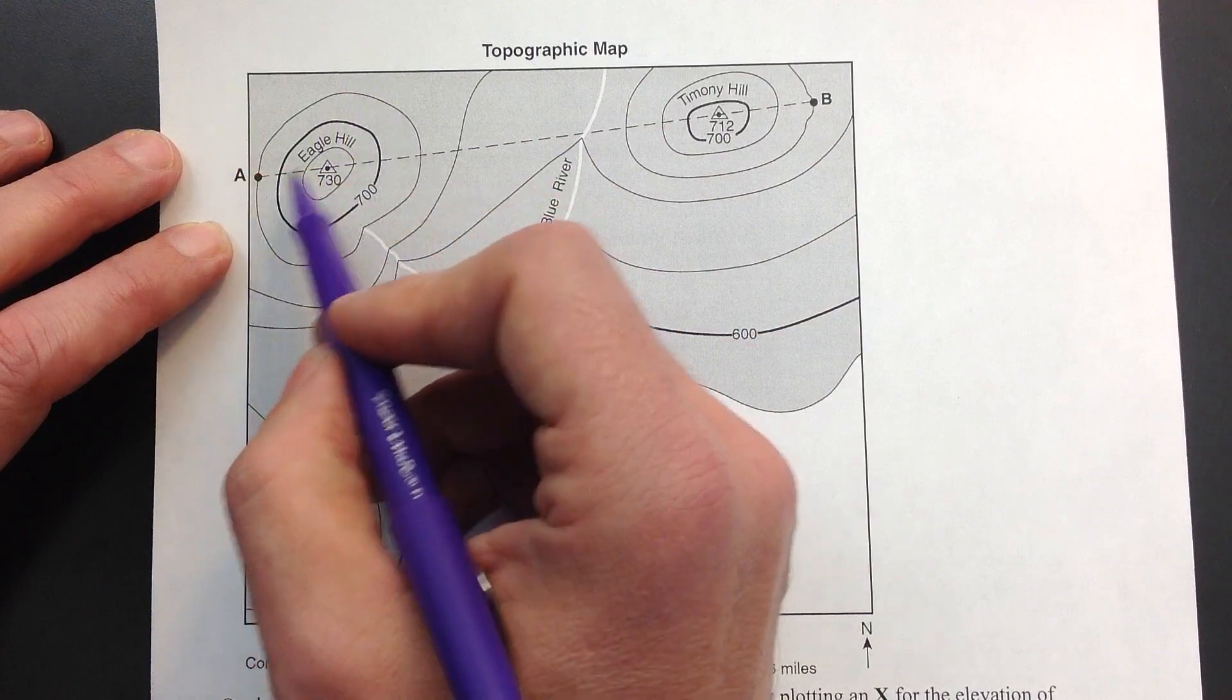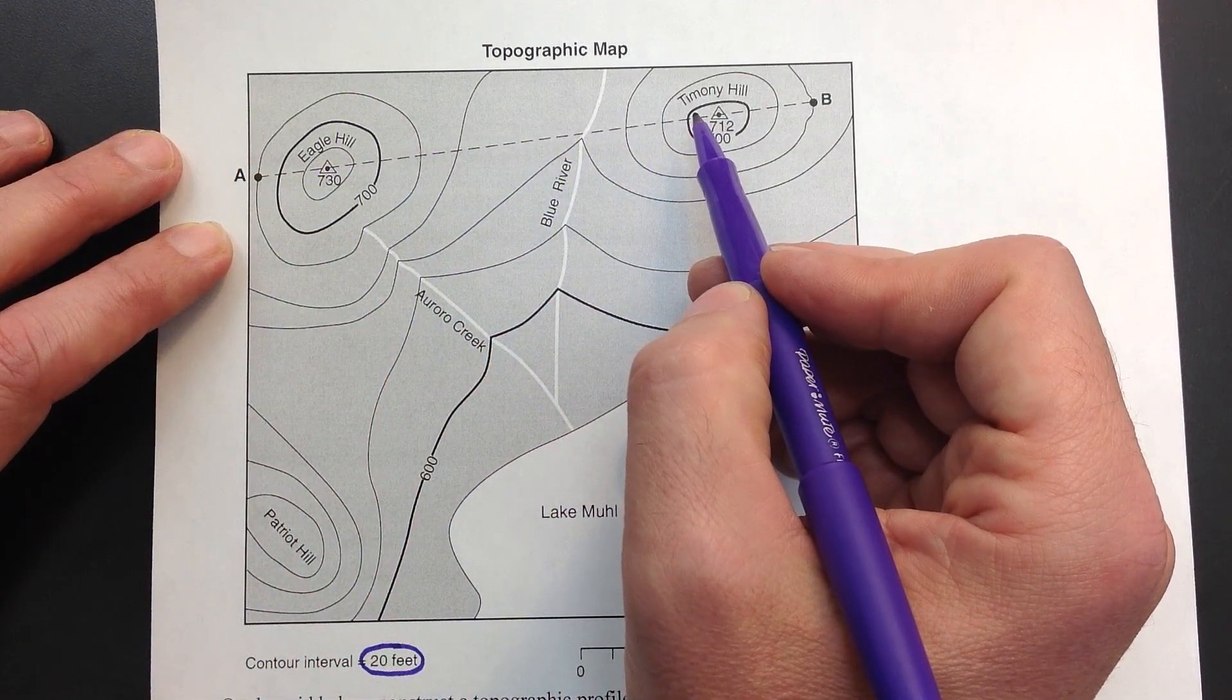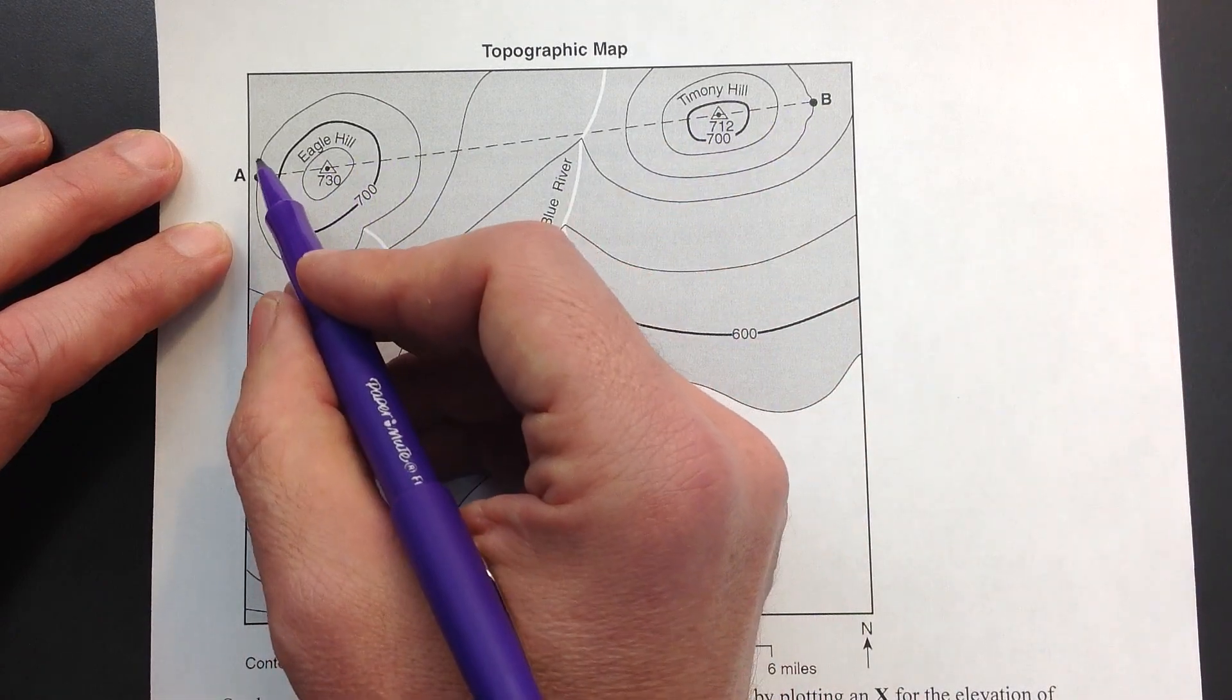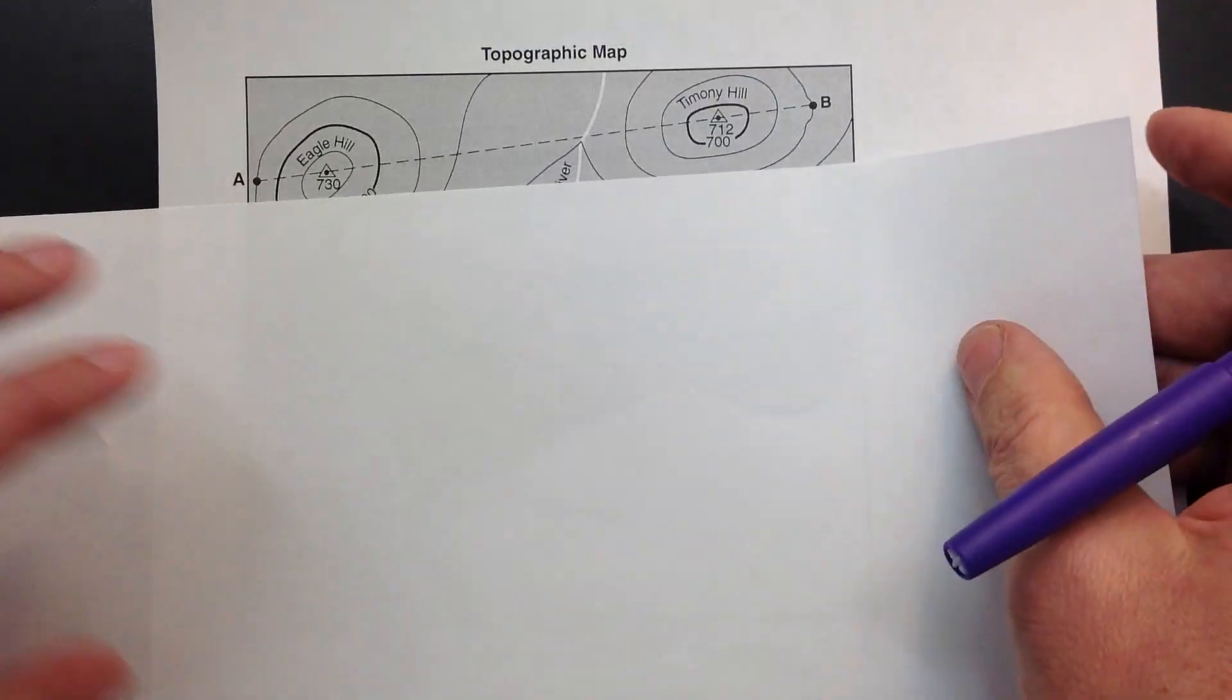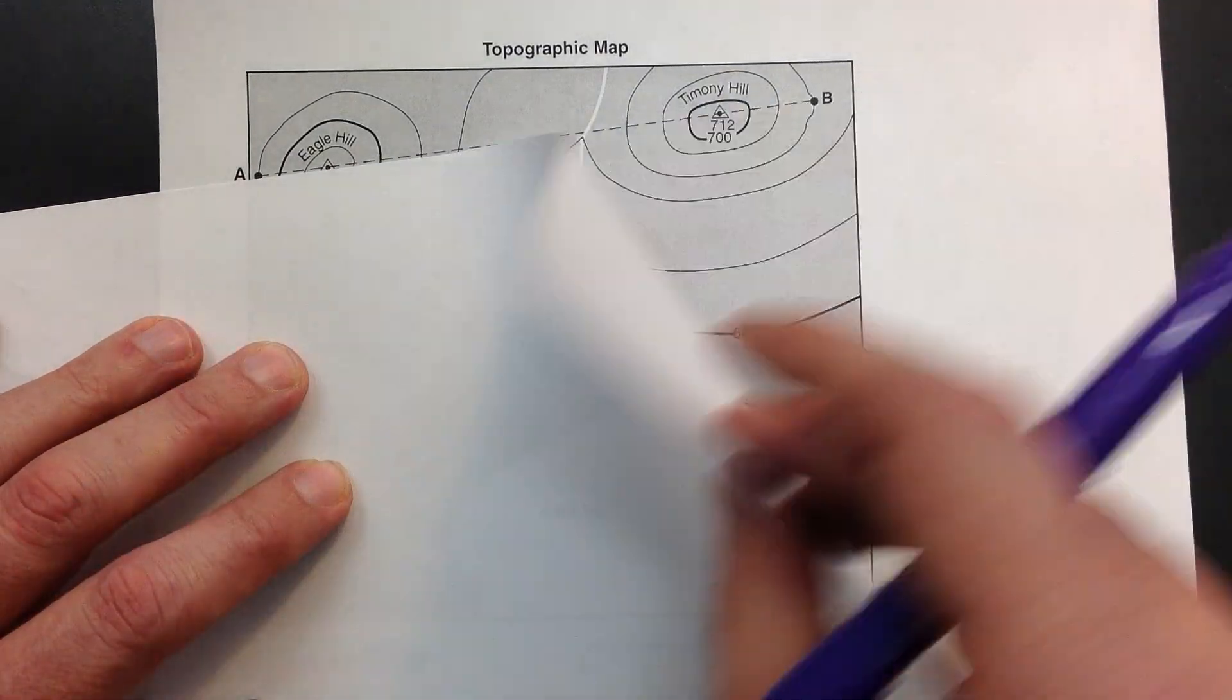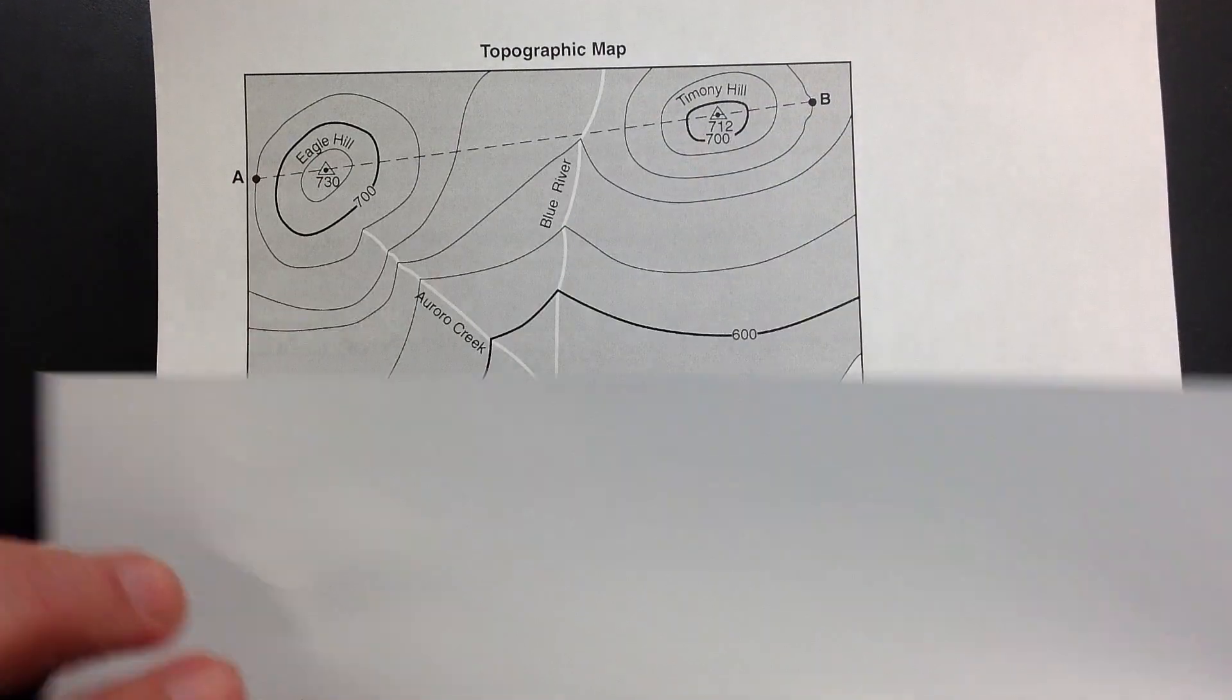So we're going up a hill, down a hill, to a river, up the western side of Timony Hill, back down the eastern side. The easiest way to do this, I like to label each one of my lines. Because what will happen is, at some point, we're going to put a piece of paper, we're going to write down our elevations, and you do a lot of this, which can get sloppy. I'm going to show you an easy way to do this.